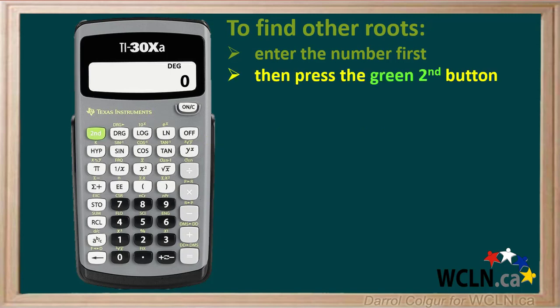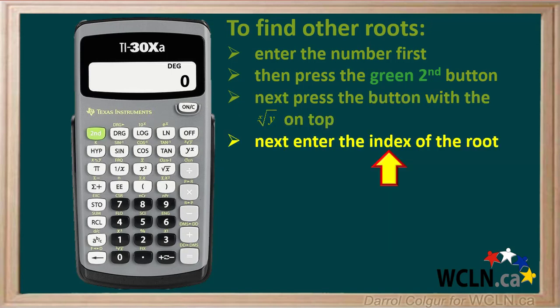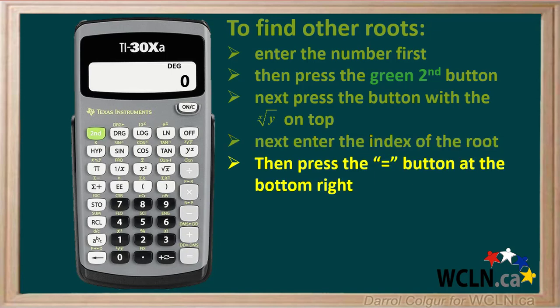Because this is a second function, press the green second button. Next, press the button with the xth root of y on top — this is the y to the power x button. The next thing to do is enter the index of the root you want to find. For example, if you want to find the 4th root, enter 4 at this point. To get the answer, press the equals button on the bottom right.